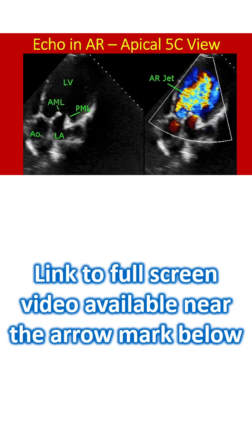An apical 5-chamber view shows the dilated left ventricle, thickened anterior mitral leaflet and posterior mitral leaflet. In this view also, the AR jet is large, extending deep into the left ventricle, indicating severe AR.